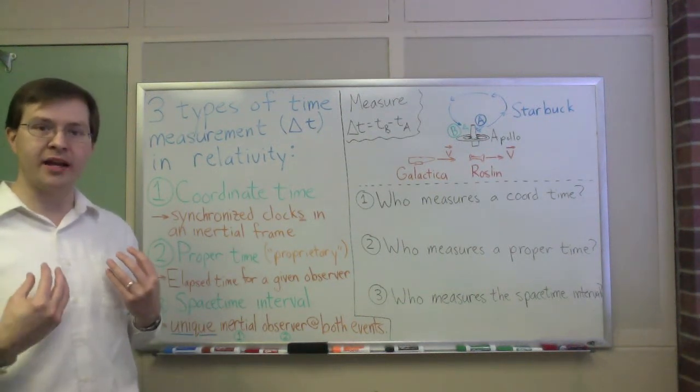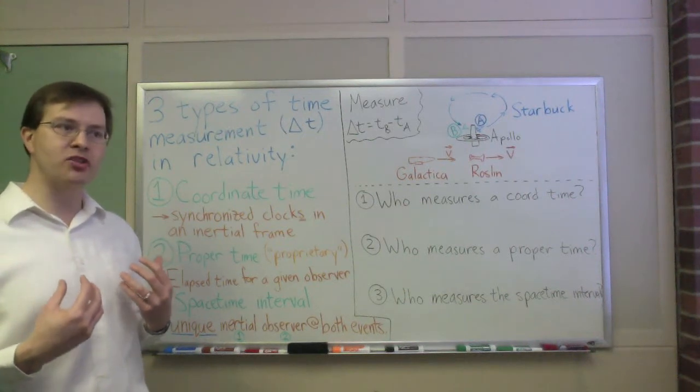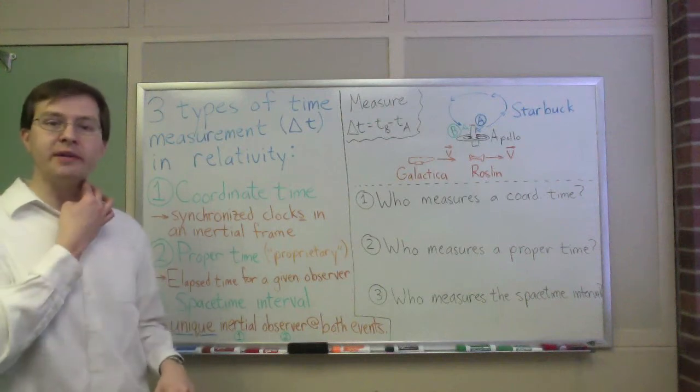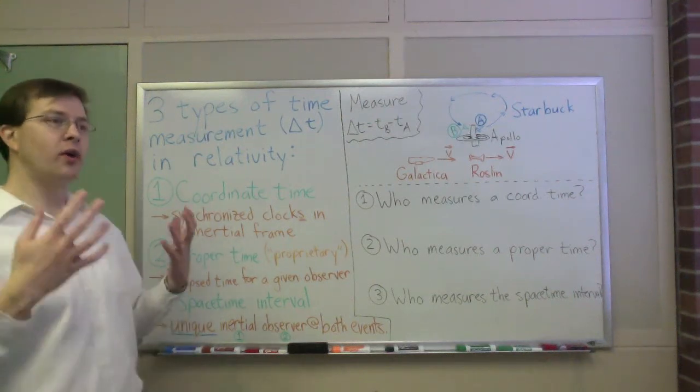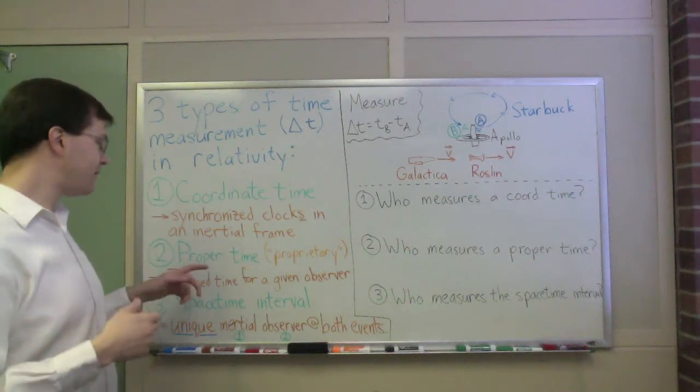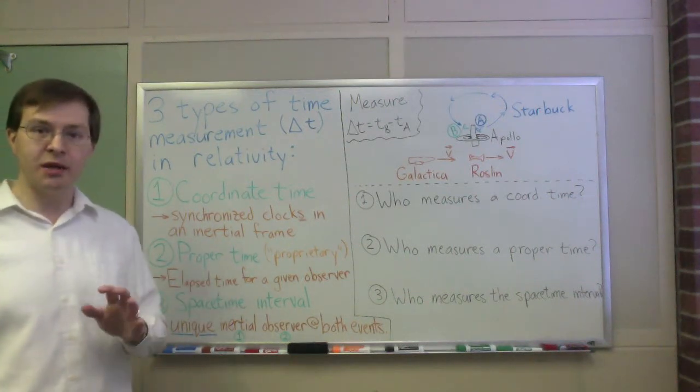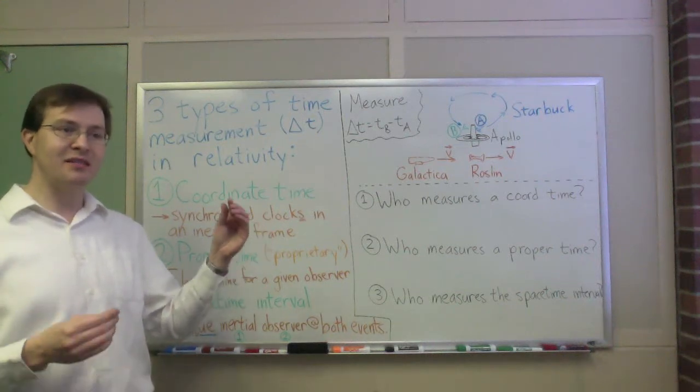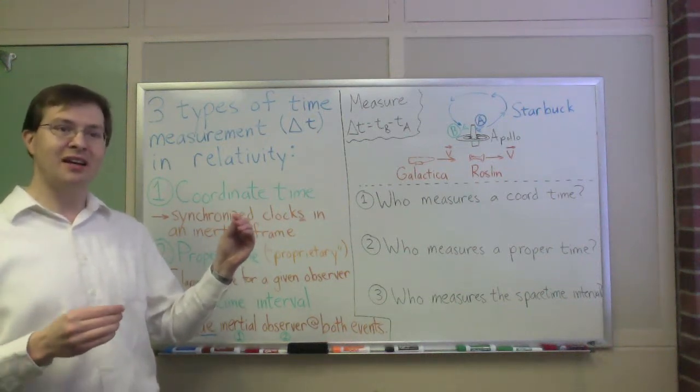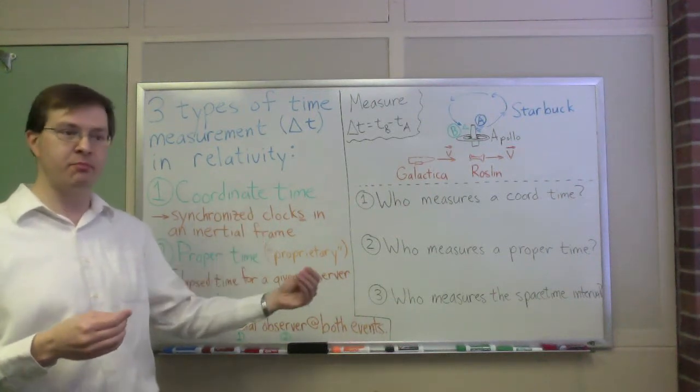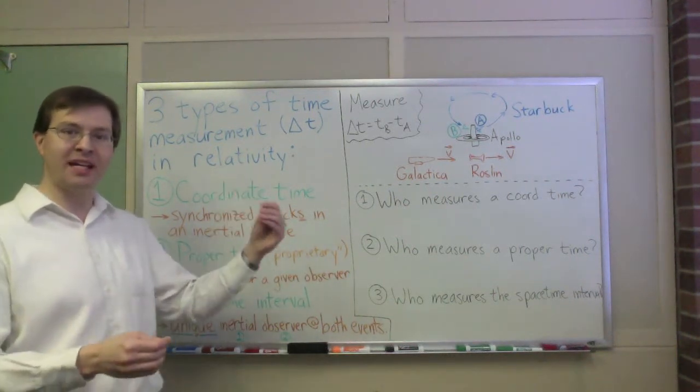For me, as an observer, the difference is my measured proper time between event A and event B. It could be a wristwatch. I could just be counting heartbeats if I'm really good at that. Whatever it is I use to count time in my own experience, that's what my proper time is. The key point here is that if I'm counting the proper time between two events, that means I have to specify some observer who was present at both events. It can't just be Hal and his friend Bob. It's got to be Hal at the beginning and the end.